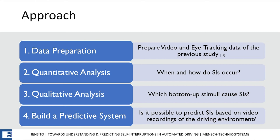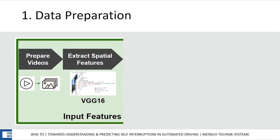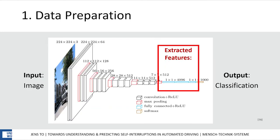Then for the qualitative analysis to answer which bottom-up stimuli caused them. And lastly, to train a machine learning model to answer whether it is possible to predict them based on video recordings of the driving environment. First, I converted the video recordings of the driving environment into images, which I then fed into the image classifier VGG16 to extract relevant spatial features.